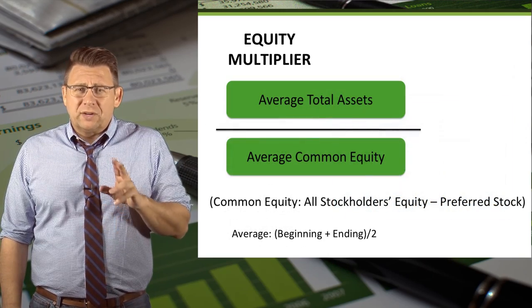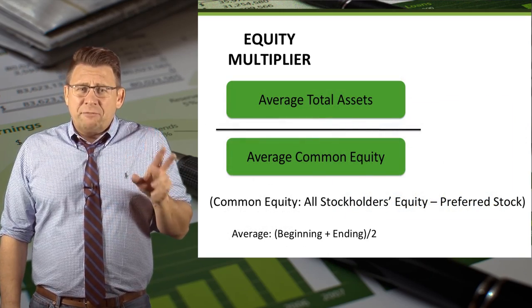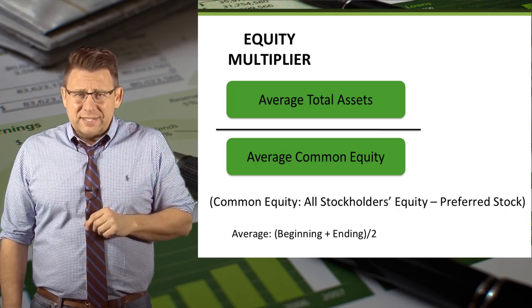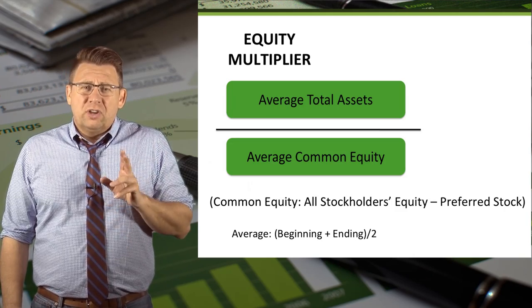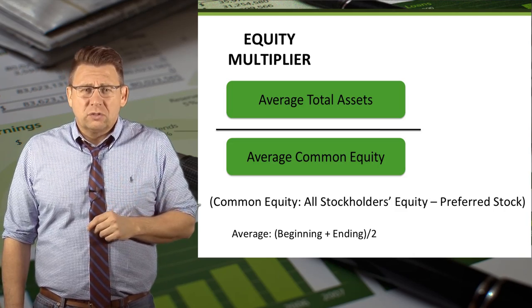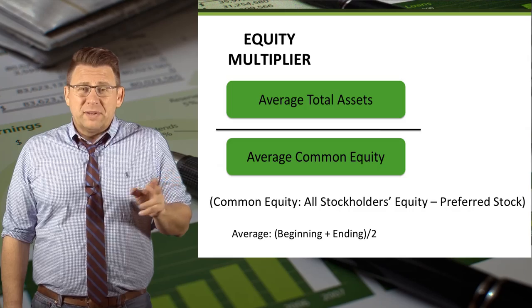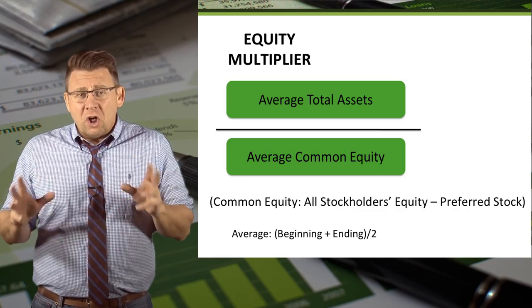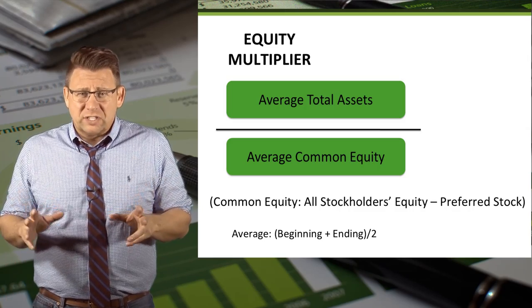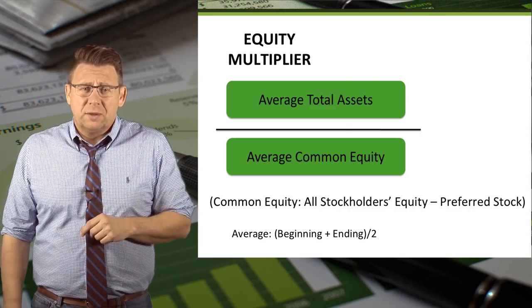The Equity Multiplier is calculated as average total assets divided by average common stockholders' equity. Common stockholders' equity is all of the stockholders' equity minus the preferred stock.